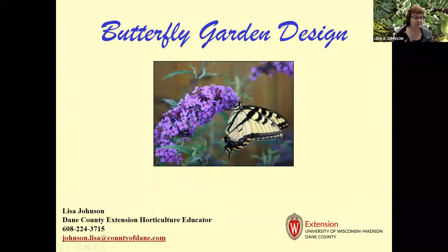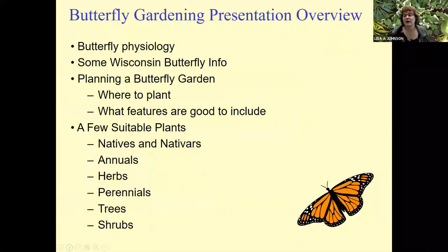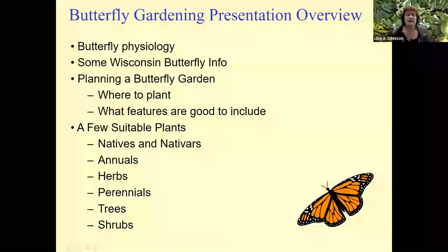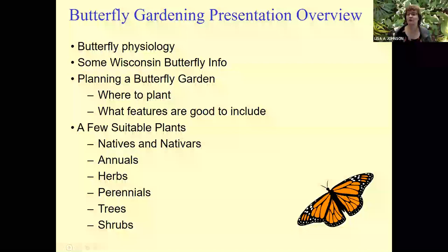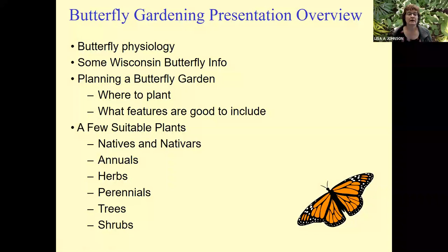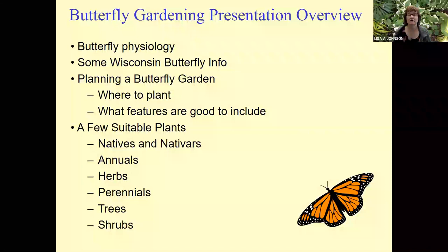So this is an overview of the talk. I'm just going to touch a little bit on butterfly physiology and life cycle, because it's important to understand how that works so that you can properly design a butterfly garden. And then we'll hit again very briefly on some Wisconsin butterfly information, including a couple of endangered species. And then we'll get into the meat of the presentation: the planning of a butterfly garden, where to do it, features to include, and we'll talk about a number of different plant materials that work in butterfly gardens.